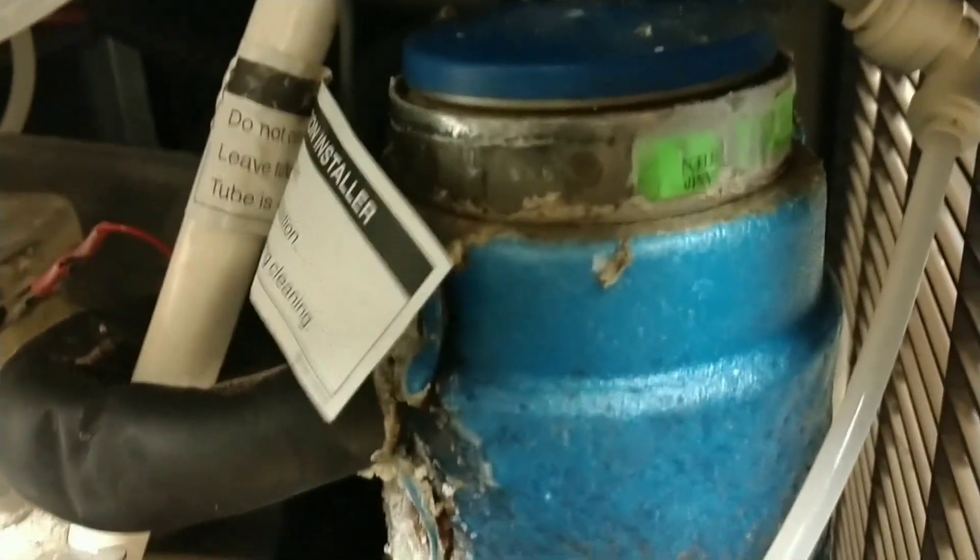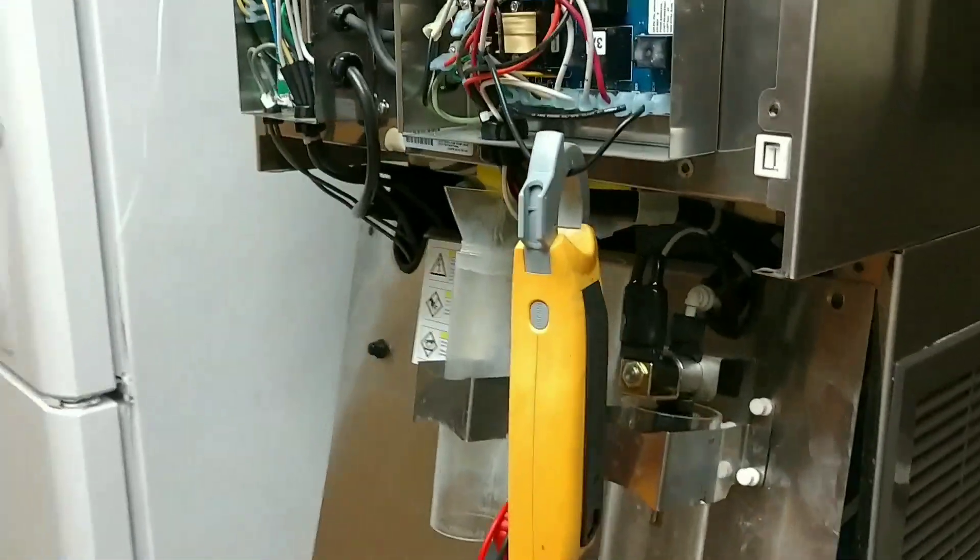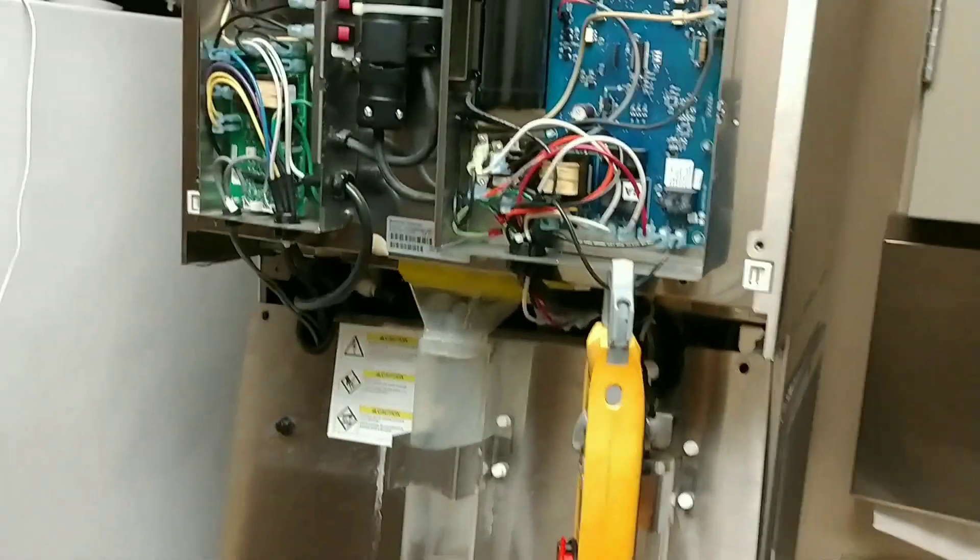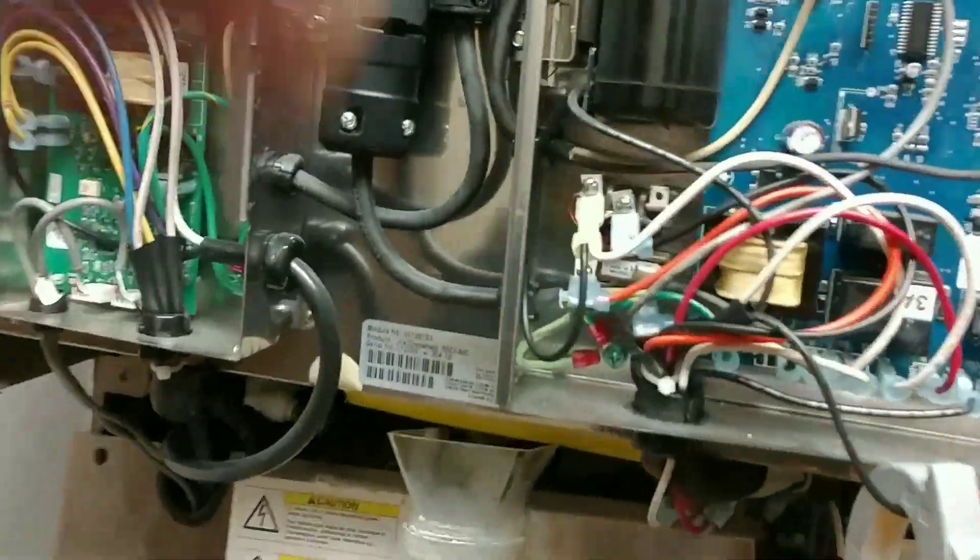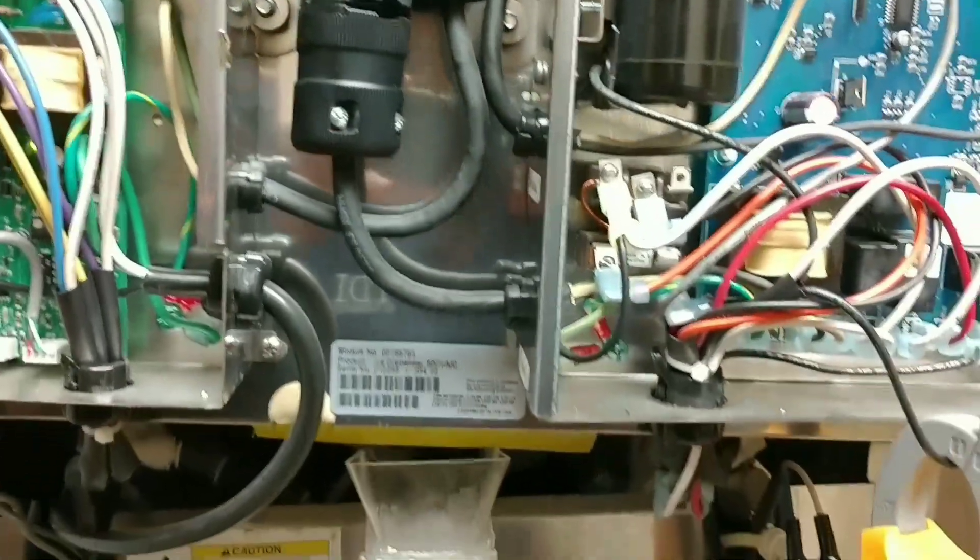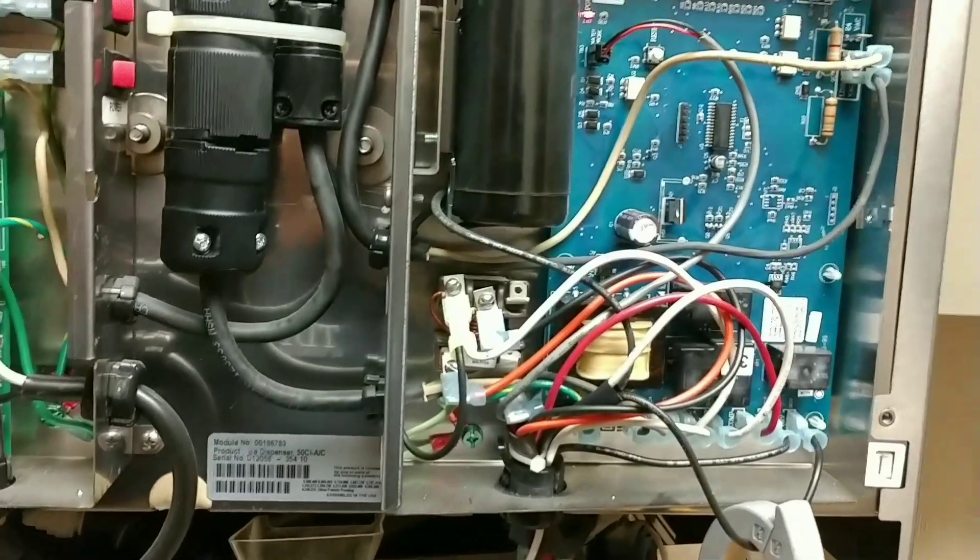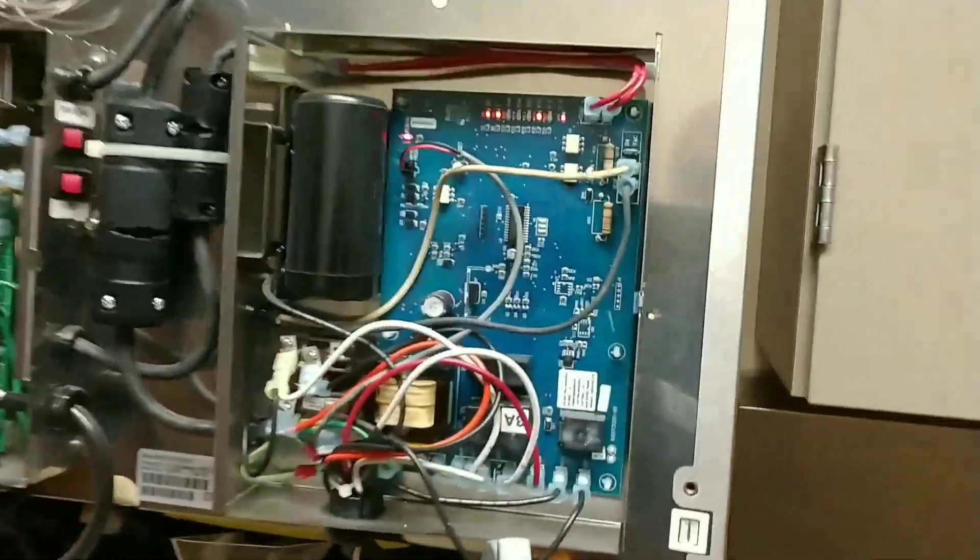So anyways, that's your evaporator right there and we have an auger that moves the ice up. It's got bearings on the top and the bottom, and when the bearings are going bad you get that 20m light.